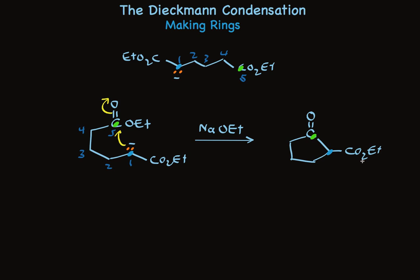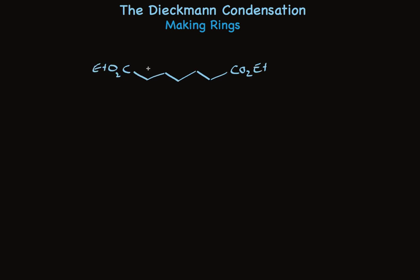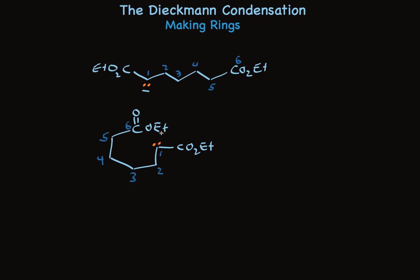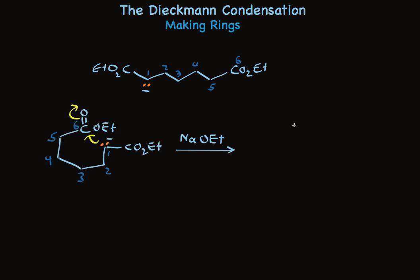Making a six-membered ring is much the same. Now the carbons involved are one through six, so we'll make a six-membered ring. The enolate will be at this alpha carbon. To redraw the structure to make it easy to visualize ring formation — this will be the first carbon in the ring — we can follow with the same numbering pattern. The enolate anion is here at this alpha carbon, and nucleophilic addition occurs to make a carbon-carbon bond here. So we end up with this cyclohexanone.